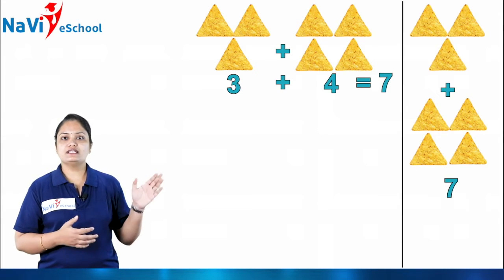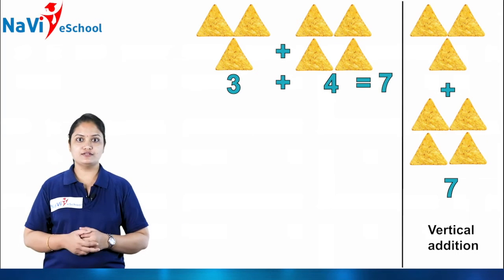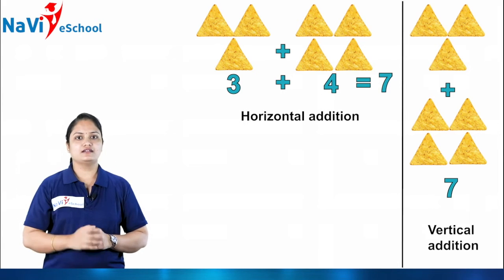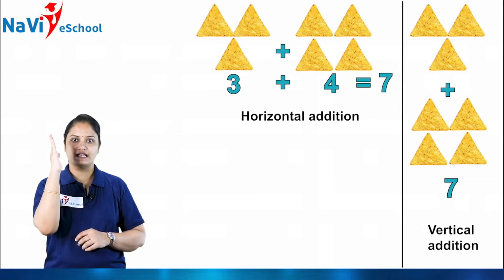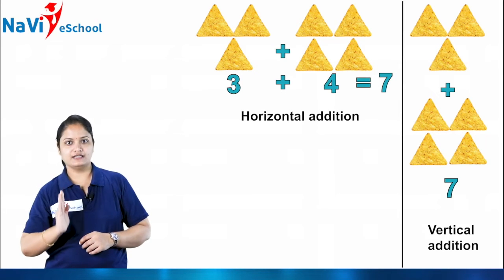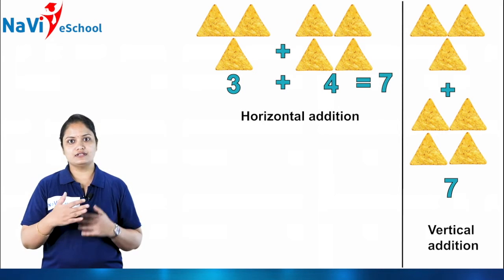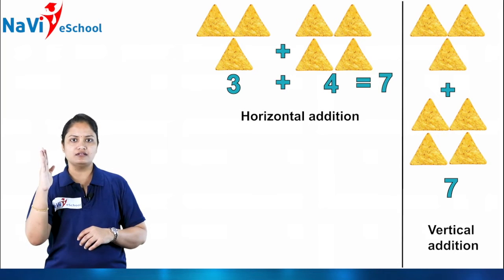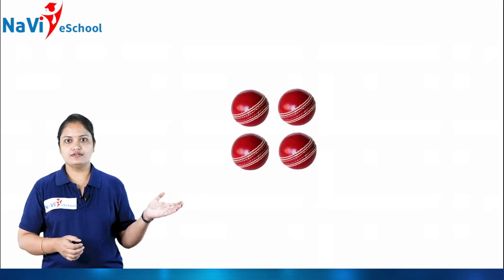This method is called vertical addition. Before, what we did was horizontal addition — horizontal means a sleeping line. Now what we did is vertical — vertical means a standing line. So standing, we did the addition. The answer is the same whether horizontal or vertical. Now let's take another example.